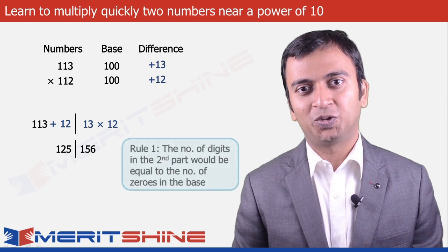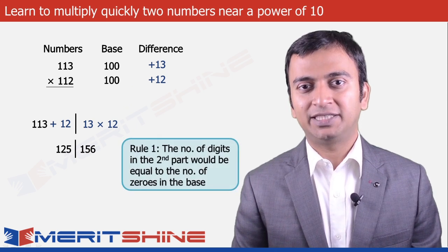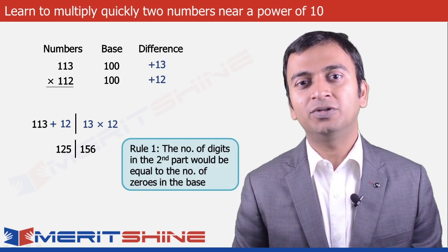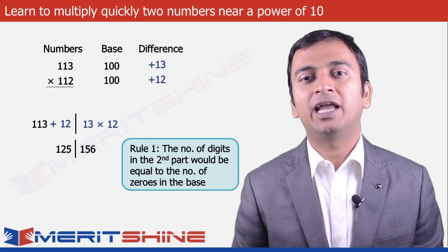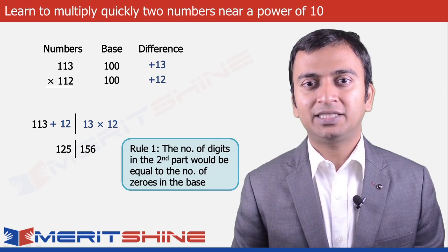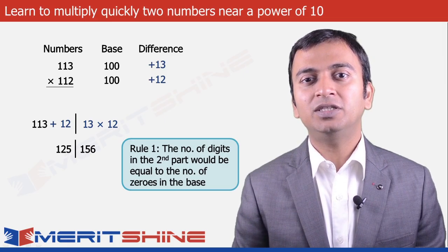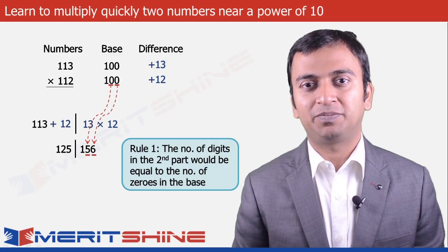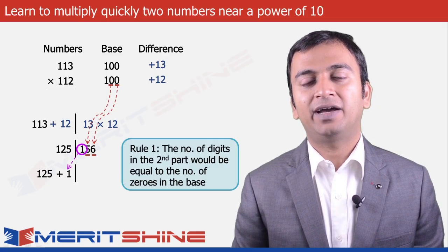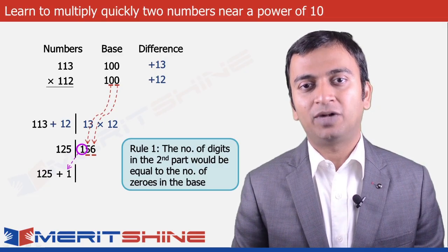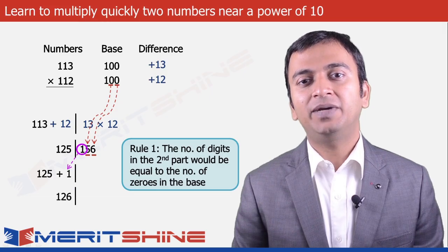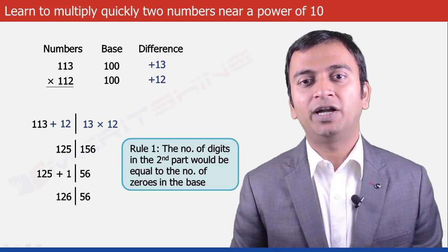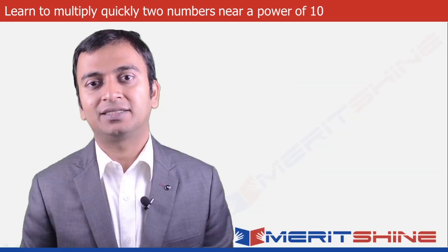The second part would be the product of differences: plus 13 into plus 12, which is 156. Here comes our first rule: the number of digits in the second part will always be equal to the number of zeros in our base, which in this case is 2. So 1 has to be carried over to the first part, making 125 become 126, and we will be left with 56 in the second part. Hence our answer would be 12656.